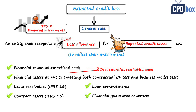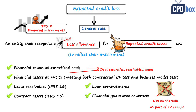Be careful, because shares, equity instruments, derivatives and similar types are not subject to impairment loss under IFRS 9. Why? Because these assets are measured at fair value, and the potential impairment is included as a part of the fair value measurement.